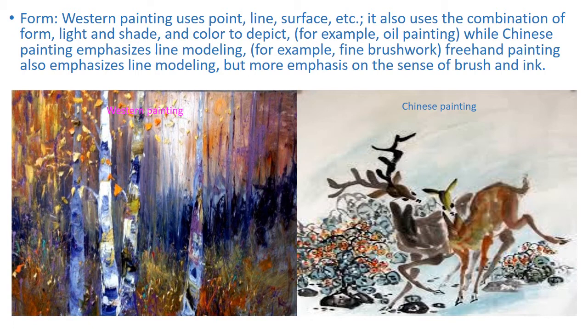For Western painting, you use point, line, surface, etc. You also use the combinations of form, line and shade, and color to depict — for example, oil painting. While Chinese painting emphasizes line modeling — for example, fine-brushwork painting. Freehand paintings also emphasize line modeling, but with more emphasis on the use of brush and ink. Here is the Western painting example, and there is the Chinese painting example.